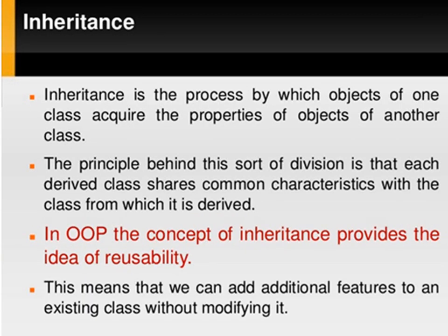The next concept is inheritance. Inheritance is the process of receiving some characteristics or properties from one class to another class. There are two classes: the first is called the base class and the second is called the derived class. Both classes share common characteristics. In OOPs, the concept of inheritance provides the idea of reusability, meaning we can add additional features to an existing class without modifying it. A real time example: we have some characteristics from our grandmother, some from our mother, and some special characteristics of our own.